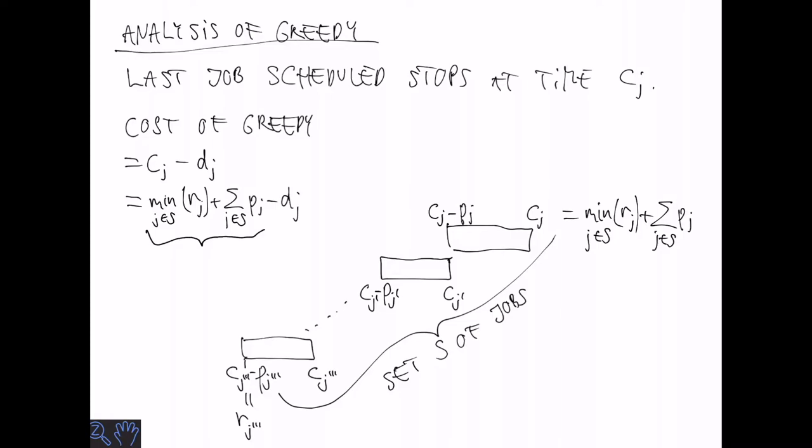So the minimum of the rj's release times, plus the sum of all the processing times. I claim that this is less than or equal to the completion time for any schedule. In particular this is less than or equal to opt.